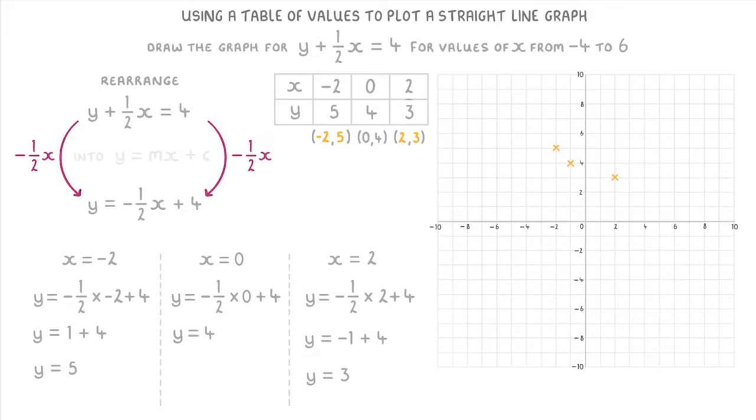For example, if we had these three points. There's no way that we could draw a single straight line that goes through all of them. So we'd know that we must have made a mistake somewhere. And one of our y values must be incorrect.